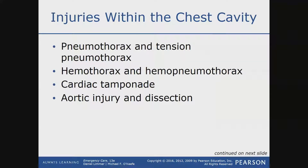A pneumothorax means that there's an air bubble somewhere inside the thoracic cavity that's not inside the lungs, but it's not growing — or it's not big enough to be life-threatening. A tension pneumothorax is a pneumothorax that continues to grow; the air bubble keeps growing and growing and can become life-threatening.